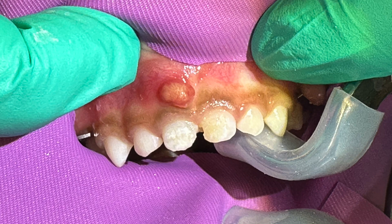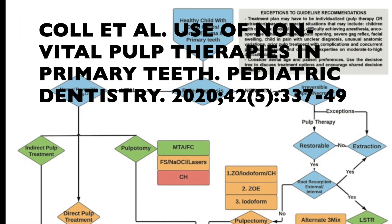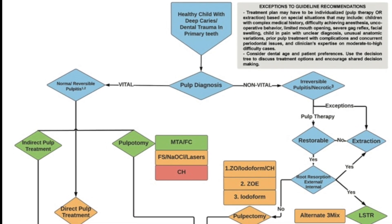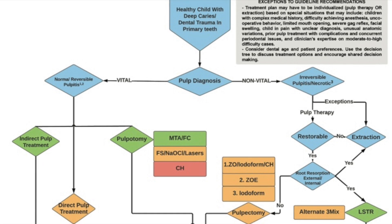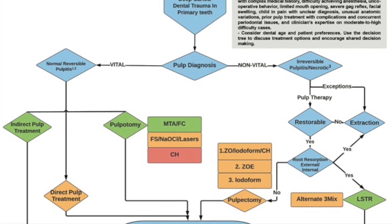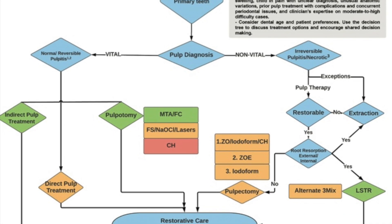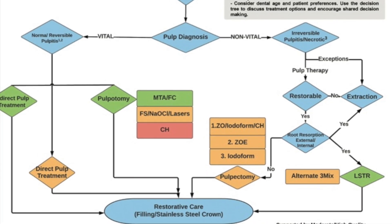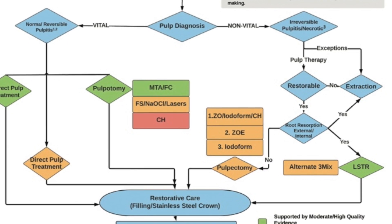You can appreciate that E as in Edward has a periapical radial lucency and abscess. I did offer the parent extraction of tooth number E, but they were very motivated to try and save the tooth, which is why we offered pulpectomy. Going back to Cole's use of non-vital pulp therapies in primary teeth, we're going to follow our flowchart of a healthy child with deep caries or dental trauma in primary teeth. Our pulpal diagnosis is either going to be vital or non-vital. In the case of the abscess tooth, we have a necrotic pulp.